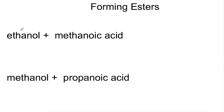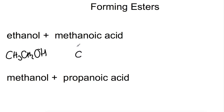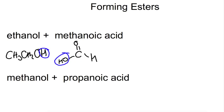Having named these esters, let's look at drawing their structures. One approach is to draw the reactants first. For ethanol: CH3, CH2, OH. For methanoic acid: one carbon with a carboxylic acid group. We remove water by taking this H and this OH, facing the functional groups towards each other for ease of drawing, and form ethyl methanoate.